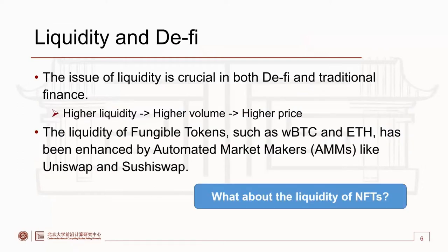We focus on the liquidity of non-fungible tokens. The issue of liquidity is crucial in both DeFi and traditional finance. If assets have higher liquidity, they would have higher trading volume and further have higher prices. In blockchain, the liquidity of fungible tokens such as WBTC and ETH has been enhanced by automated market makers like Uniswap and Sushiswap.